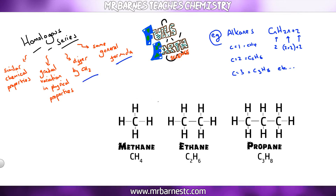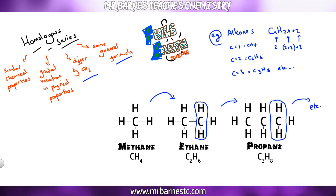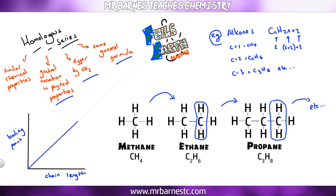The second property — they differ by CH₂. Going from methane to ethane, all you're doing is adding a CH₂, which I've circled here, and the same from ethane to propane. So every time carbon goes up by one, you get an extra CH₂ unit. Regarding gradual variation in physical properties: as chain length increases, so does the boiling point — so there is a gradual variation.